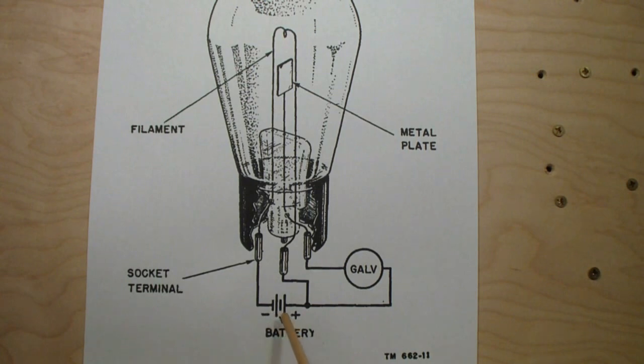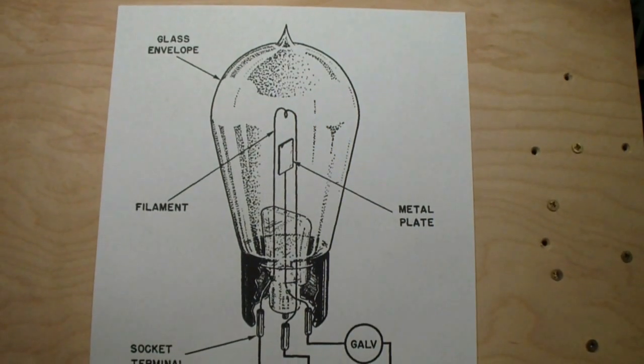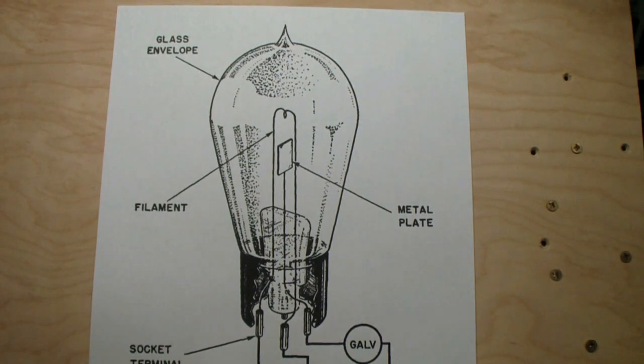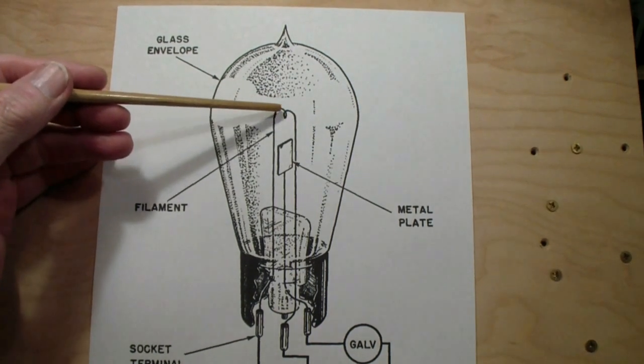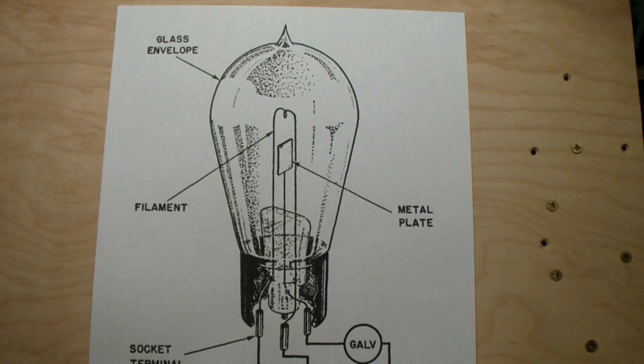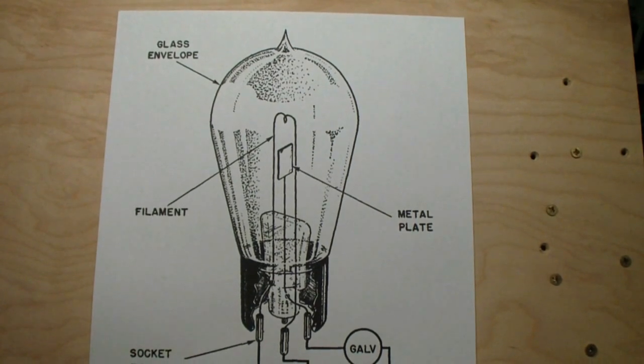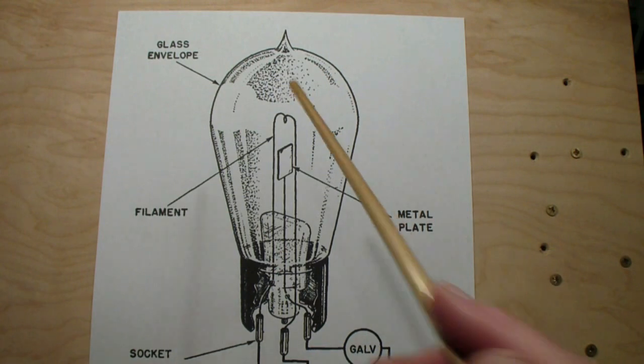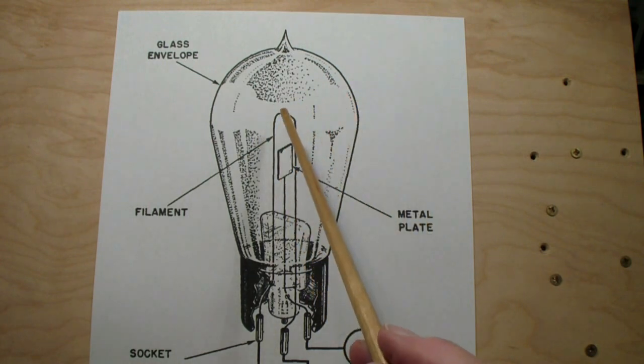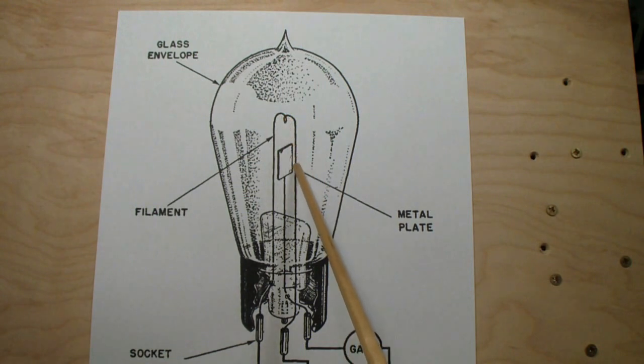Notice that the battery only supplies the filament with energy to get hot. You could actually do the same thing with a magnifying glass focusing the sun's energy. In other words, you could eliminate the battery and just have the galvanometer between one lead of this filament and the plate.